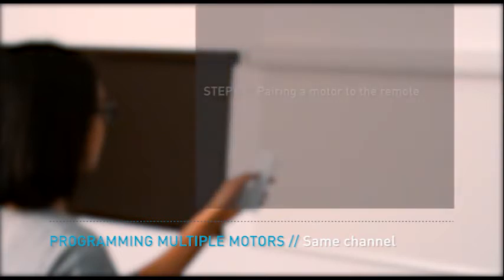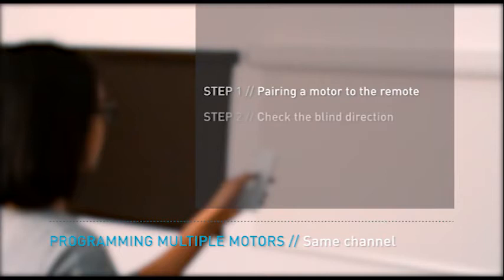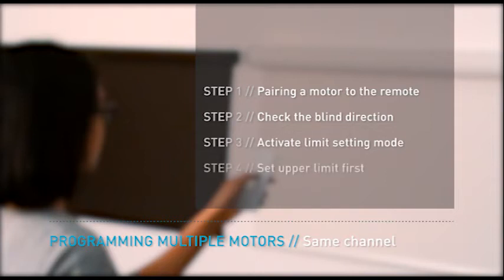Step 1: Pairing a motor to a remote. Step 2: Check the blind direction. Step 3: Activate limit setting mode. Step 4: Set the upper limit first. Step 5: Set the lower limit.